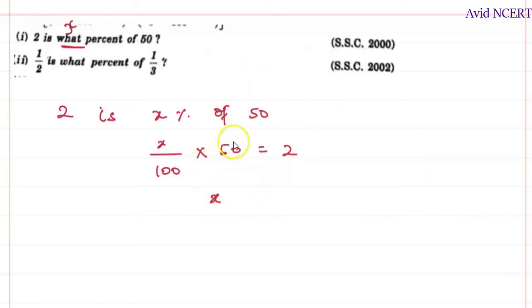So this is 50 times 100. Now 0, 0 gets cancelled. 5, 1 times 5, 2 times is 10. So x by 2 equals 2.